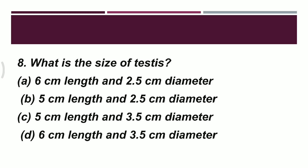Question 8: what is the size of the testes? Remember that in lectures it was mentioned that you should know the size of both testes and ovaries, as these are frequently asked in examinations. Option A: 6 cm length and 2.5 cm diameter. Option B: 5 cm length and 2.5 cm diameter. Option C: 5 cm length and 3.5 cm diameter. Option D: 6 cm length and 3.5 cm diameter.